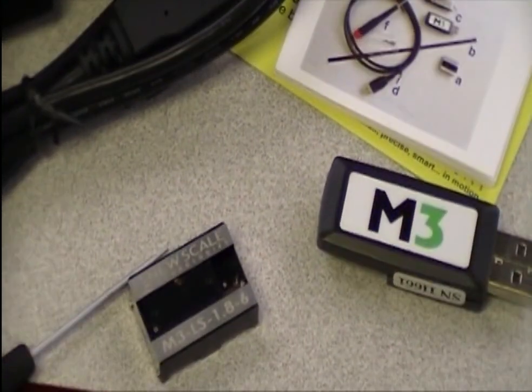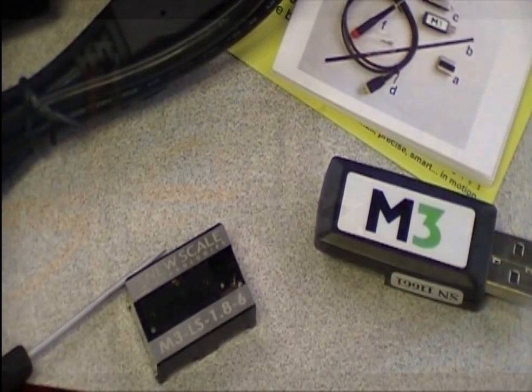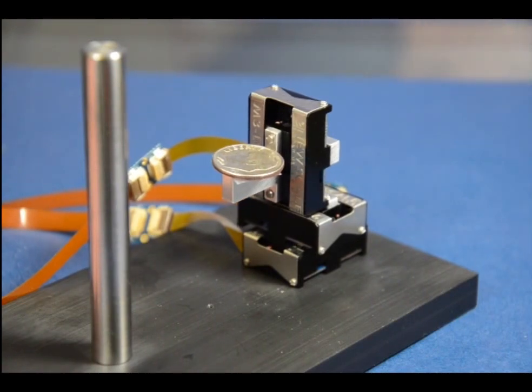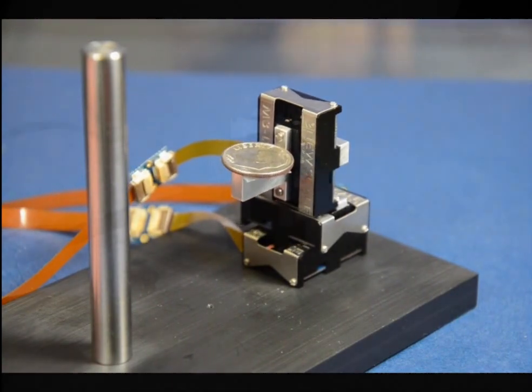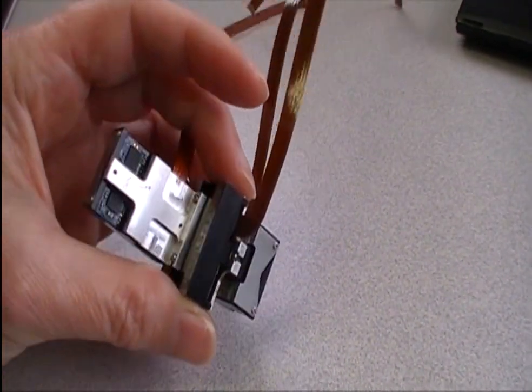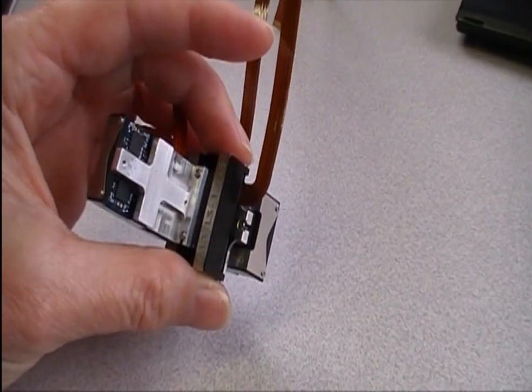The developer's kit comes with one M3LS Smart Stage. You can purchase additional stages and brackets to create 2-axis and 3-axis micropositioning systems. We can provide custom brackets and flex cable configurations to fit your space and motion needs.